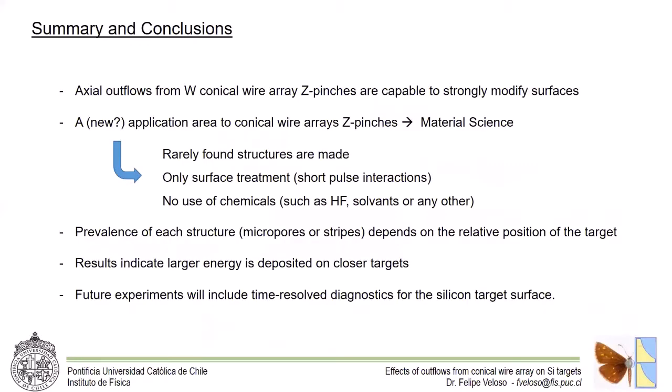So, as a summary, the axial outflows from conical wire arrays are capable of strongly modifying surfaces. I like to think that we have found a new application area for conical wire arrays in material science. In this regard, we have produced rarely found structures on the silicon surface without the use of any hazardous chemical substances, such as hydrofluoric acid or solvents of any kind.